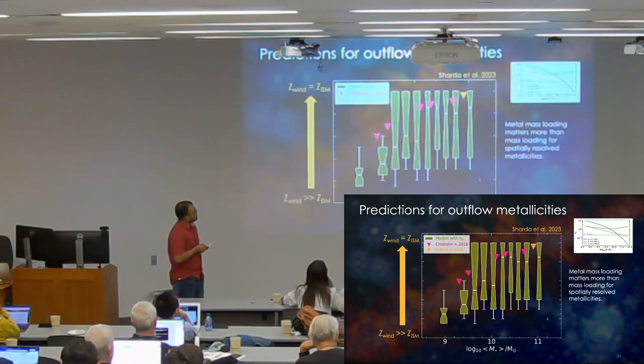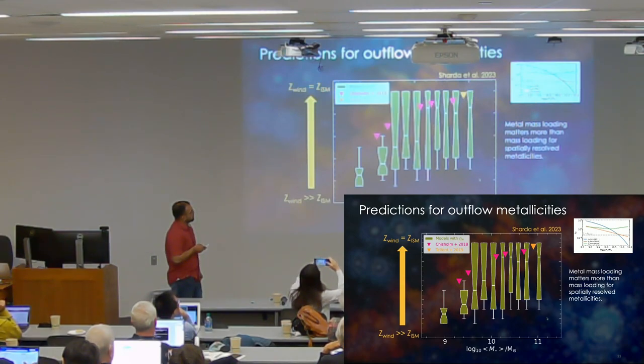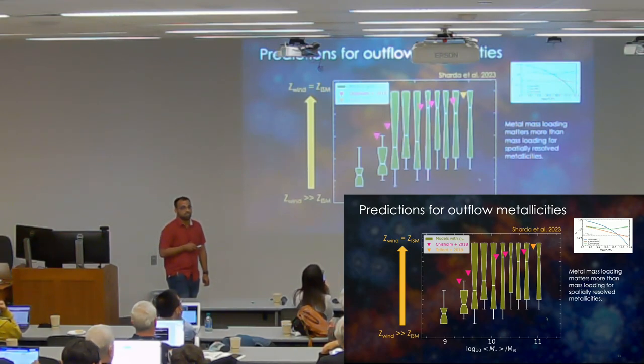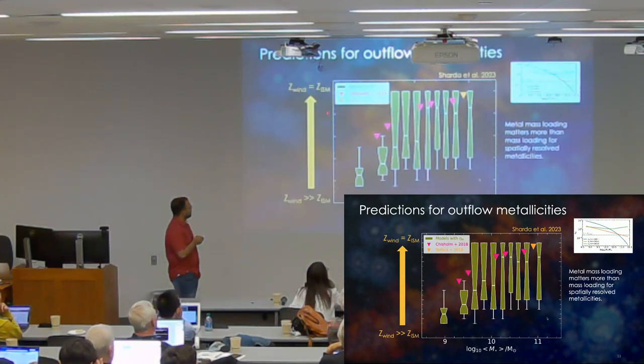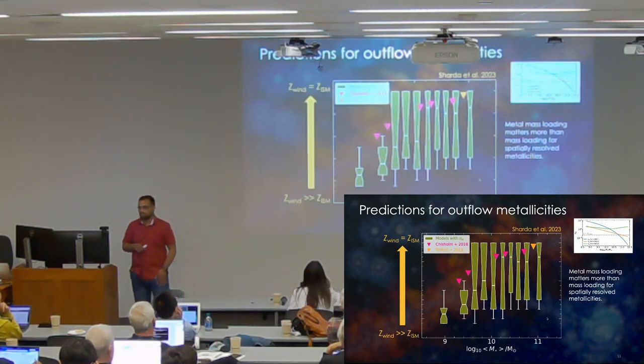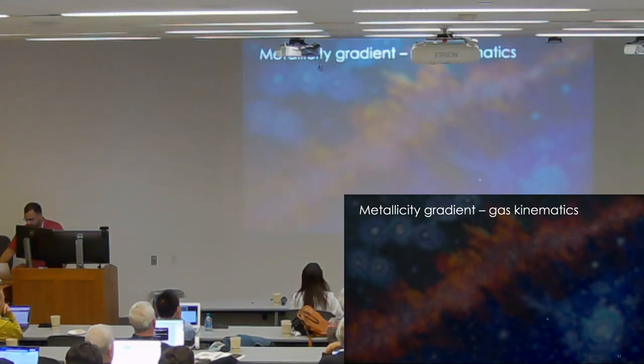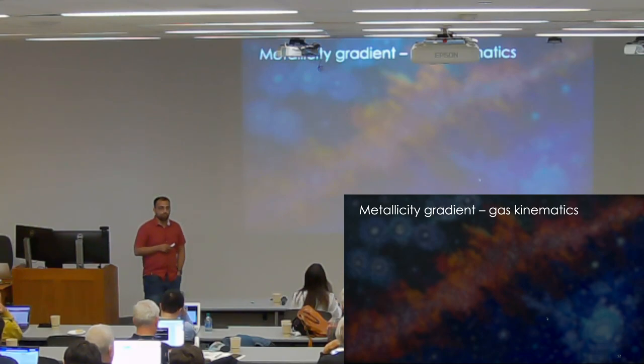So on this plot, you can see the mass loading factors as a function of stellar mass from different simulations, FIRE, EAGLE, also some analytical models. And you see that they produce very different mass loading factors across this range in stellar mass. However, this still produces very similar metallicity gradients. It's more the metal mass loading or the wind metallicity that makes a bigger difference.